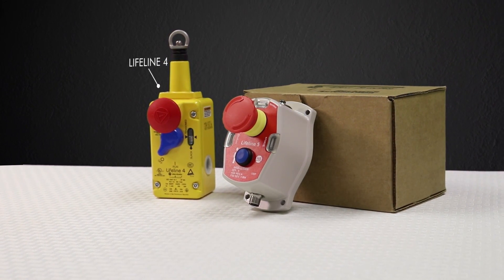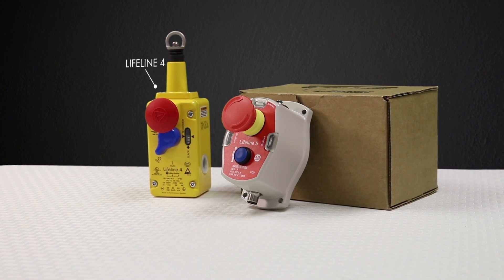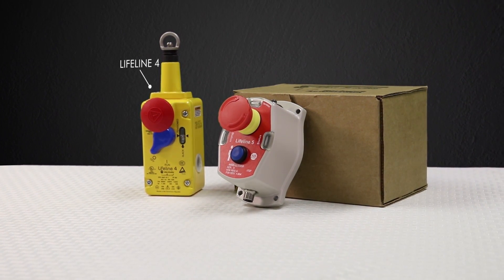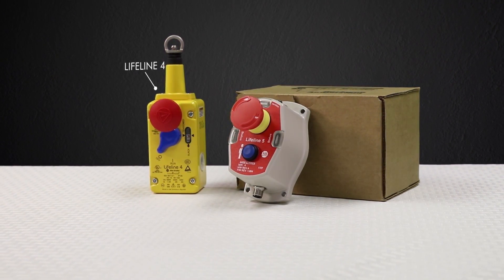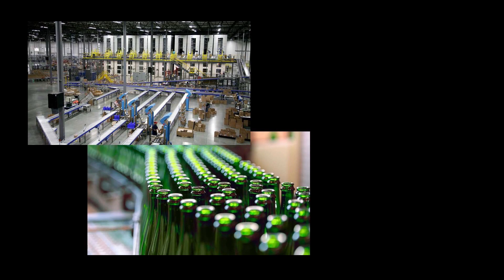Cable pull switches must detect both the pull on the cable as well as when the cable goes slack to ensure it will function when pulled. The Lifeline 4 is a widely used and successful device in the industry, suitable for a broad range of applications.